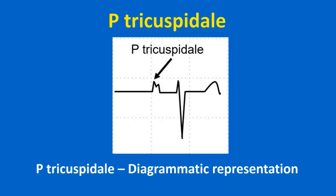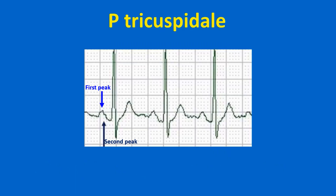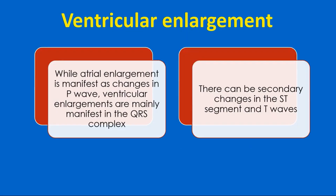An ECG tracing showing P pulmonale with tall peaked P waves in lead 2. P tricuspidale has been described in tricuspid atresia. The pattern is a mirror image of P mitral — the initial peak is taller than the second peak in P tricuspidale, and it indicates biatrial enlargement. A P wave from a monitor screenshot resembling P tricuspidale shows a wide P wave where the first peak appears taller than the second.